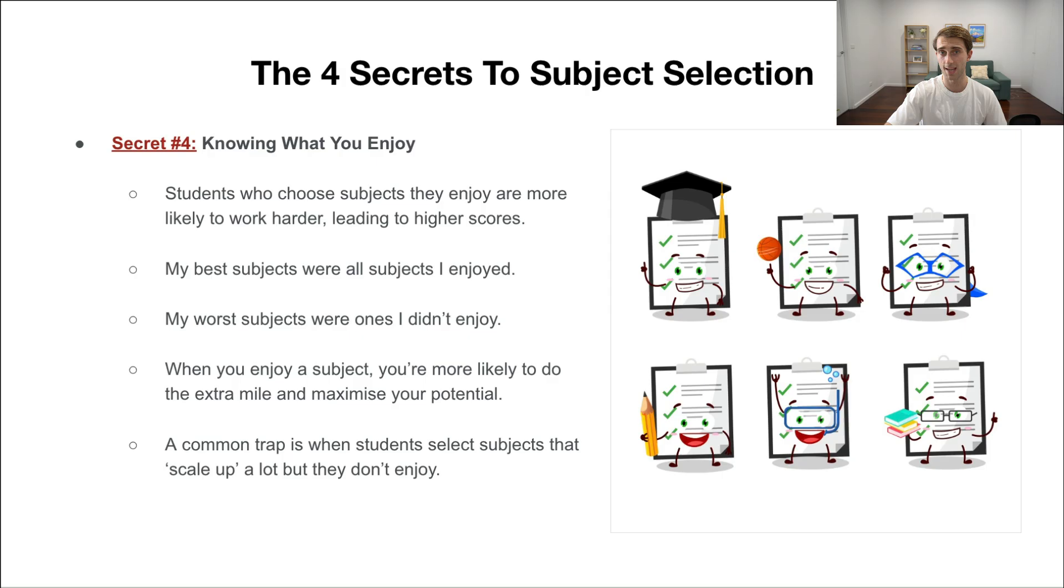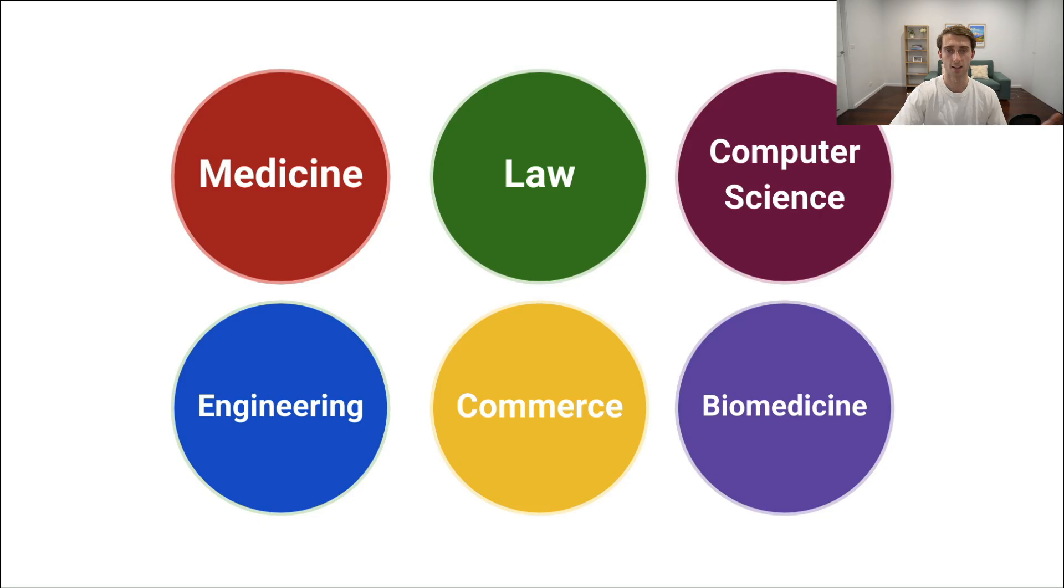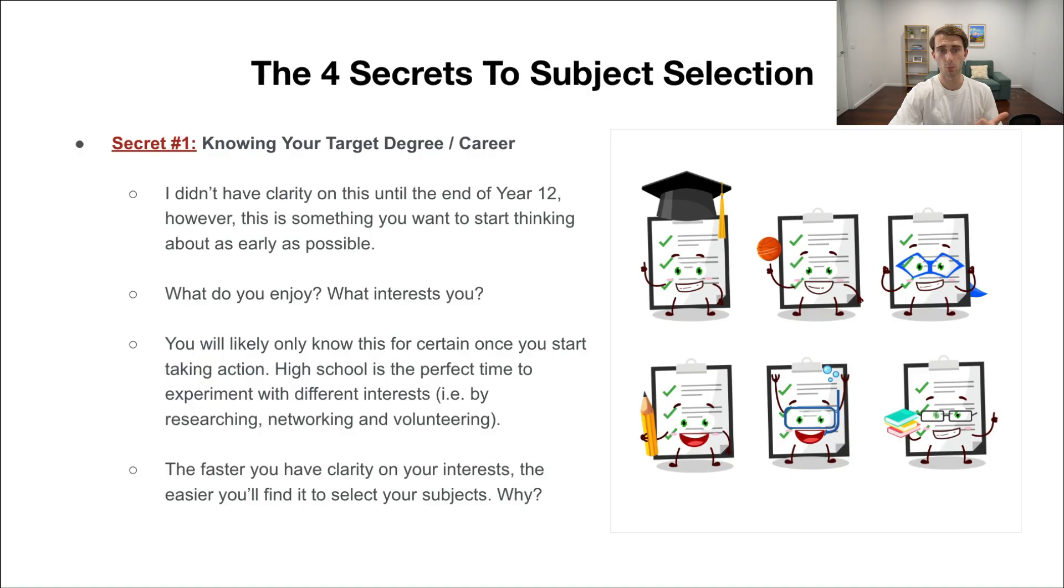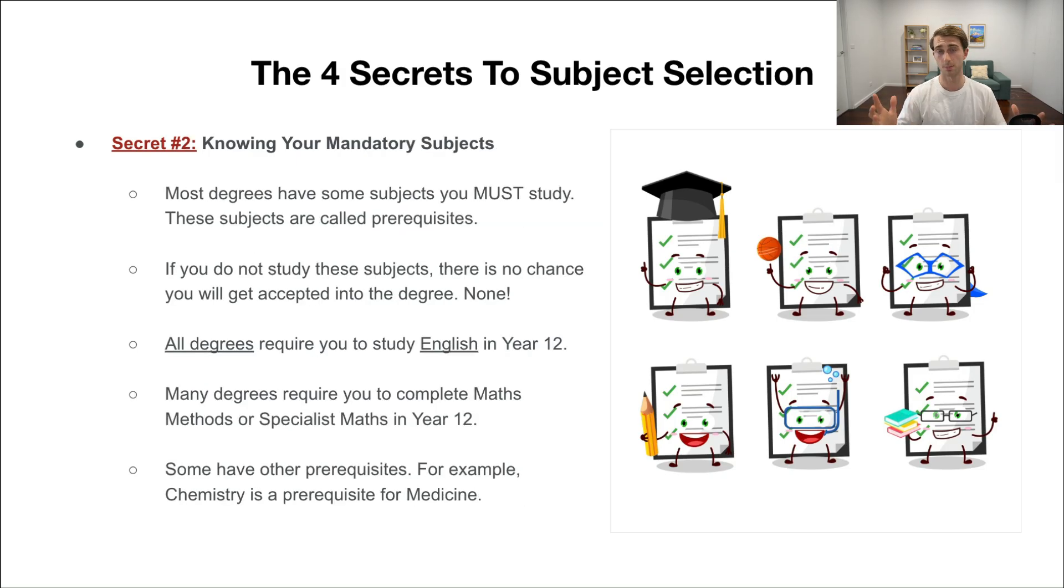Overall, key takeaways: if you want to choose the right subjects in year 11 and year 12, maximize your chances of getting a high ATAR and have the best possible chance of getting into one of these degrees, main things to think about—number one, get clarity on your target degree and career as fast as possible so you know what you enjoy, what you're interested in. That's going to impact what subjects are mandatory, your prerequisite subjects, which is really easy to look up on university websites. That's probably going to be anywhere from one to three subjects out of six.